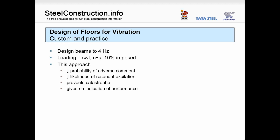If we take a look back at how we used to design beams for vibration, we did something very simple. We designed them for a natural frequency of 4 hertz, calculated from a simple formula based on the self-weight of the slab and the beam, the ceiling and the services, and 10% imposed load. That approach meant we got a lower probability of adverse comment from users and less likelihood of resonant excitation, effectively keeping us out of trouble from a structural point of view.